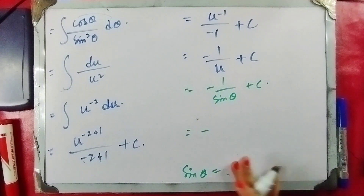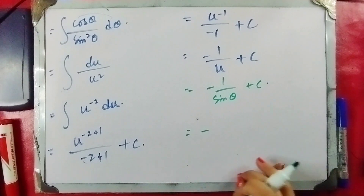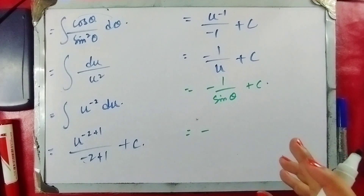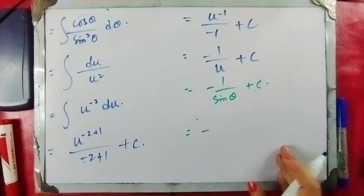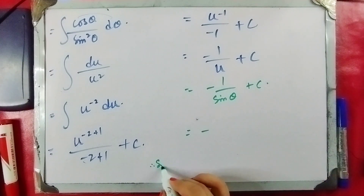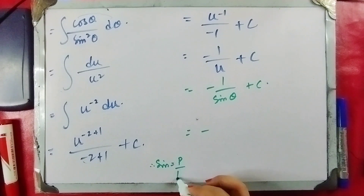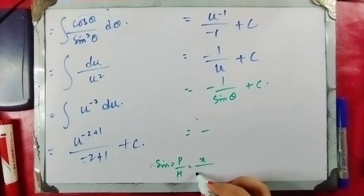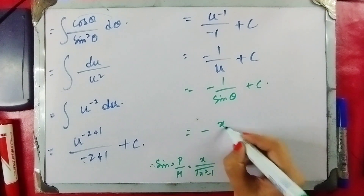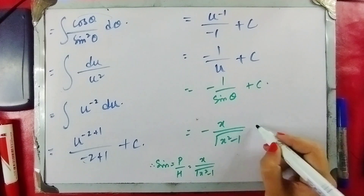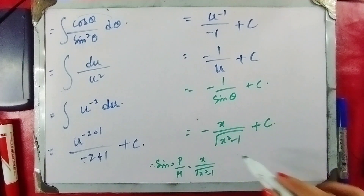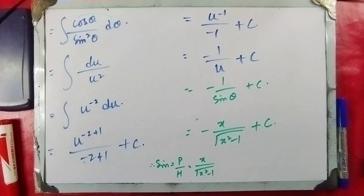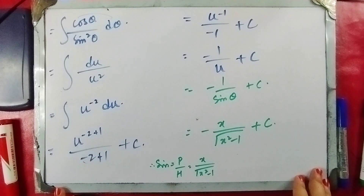We cannot use the simple form directly since the value would change with x. So we use sine equals perpendicular over hypotenuse, where perpendicular is x and hypotenuse is root of x squared minus 1. This gives us the final answer: minus x over √(x² − 1) plus C. With this, question number 21 is solved. Hope everyone understood — moving on to question number 22.